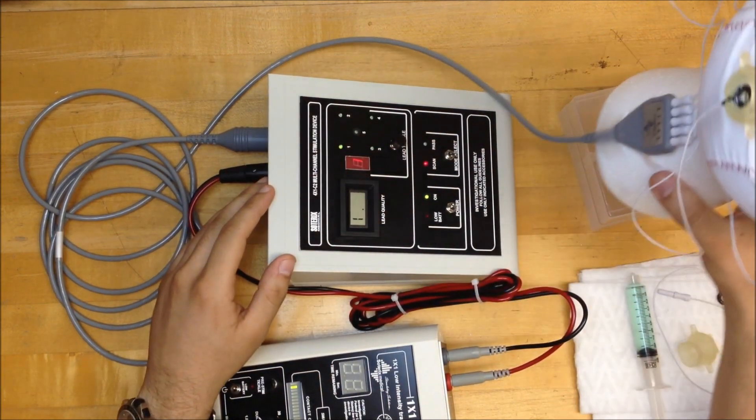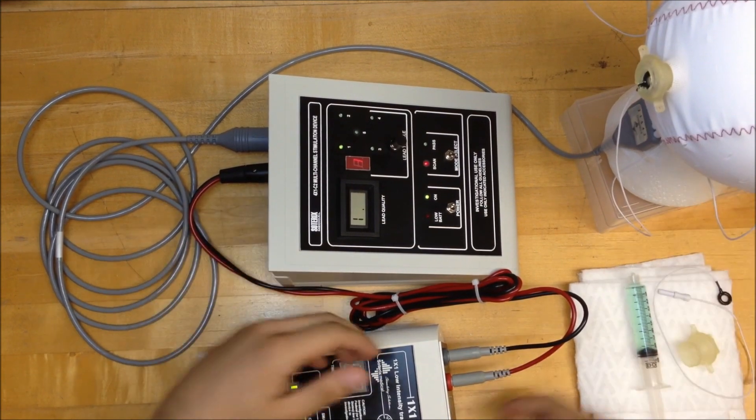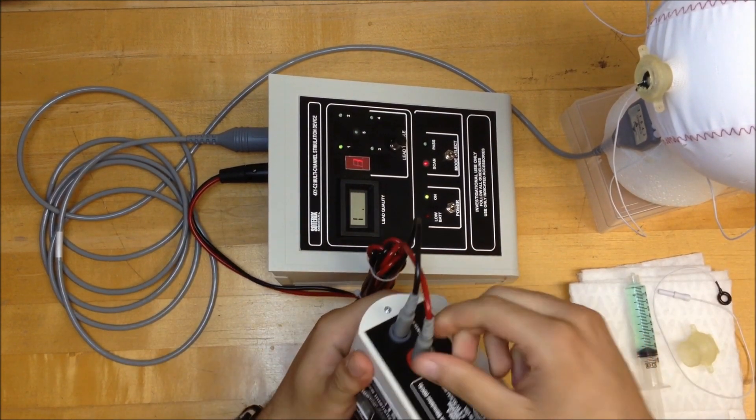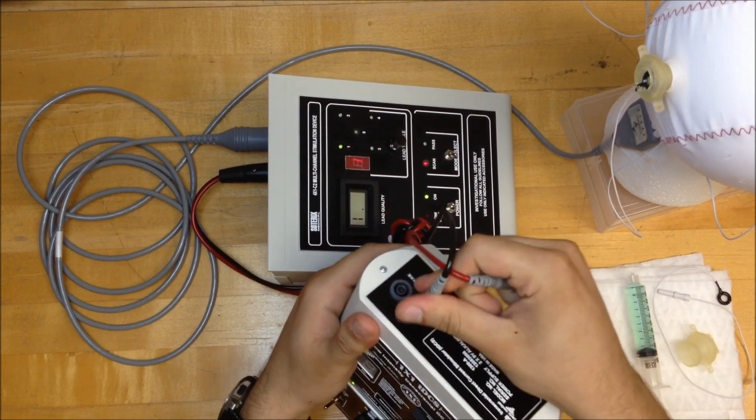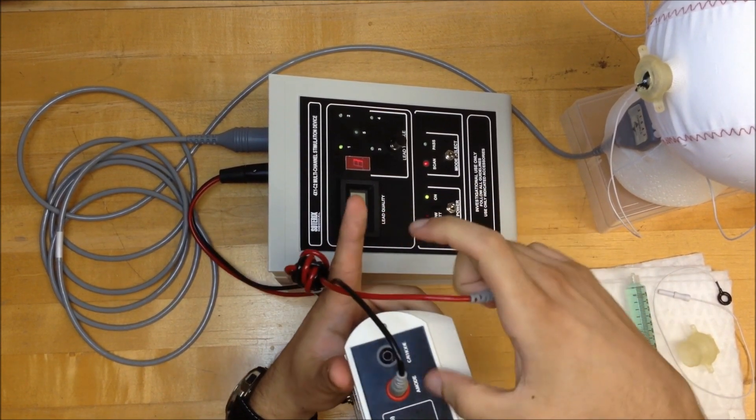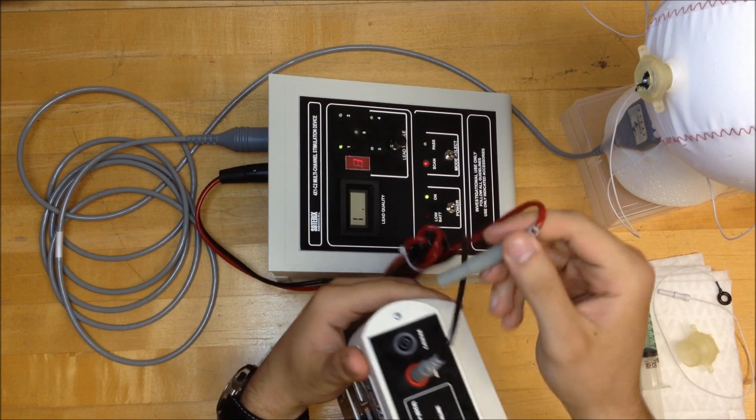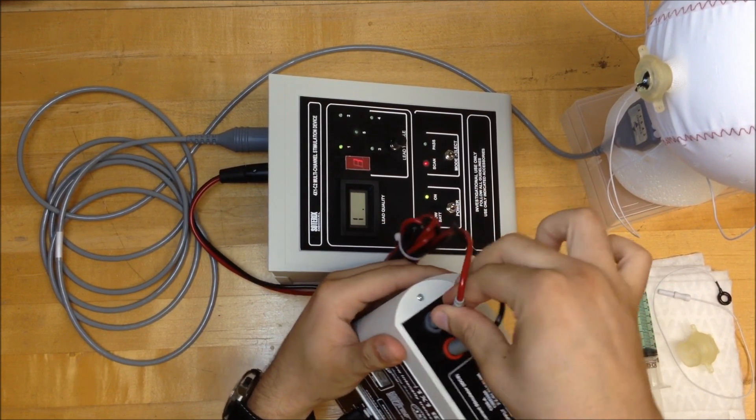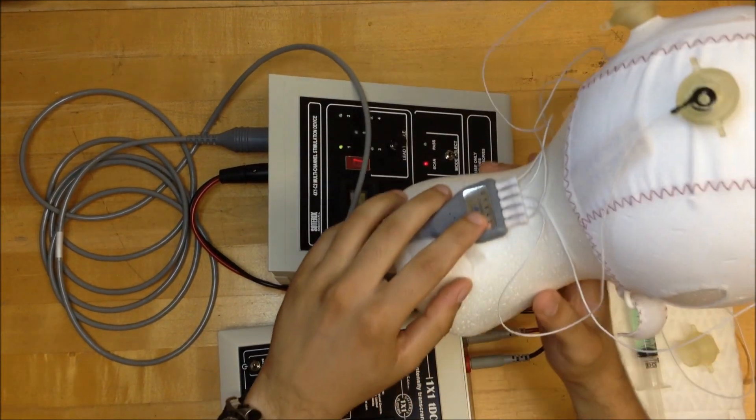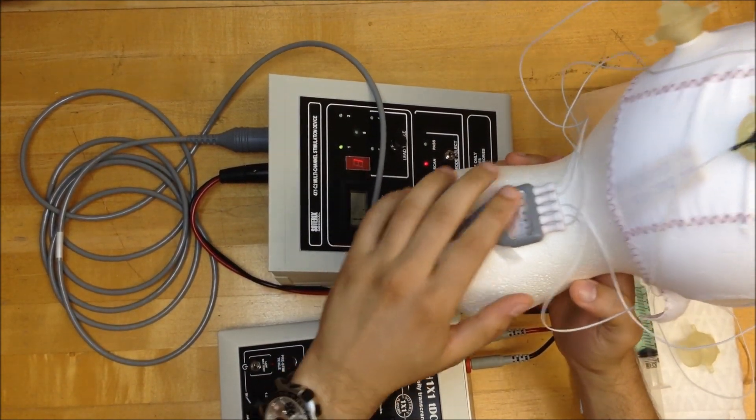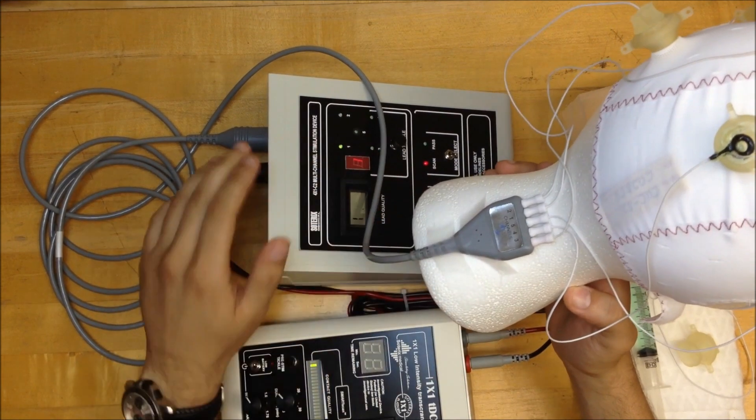Another possible configuration is called a central cathode, which simply means if you reverse the wires so that the black wire is connected to the anode and the red wire is connected to the cathode. This makes the center channel on the 4x1 the cathode while the remaining channels are anodes.